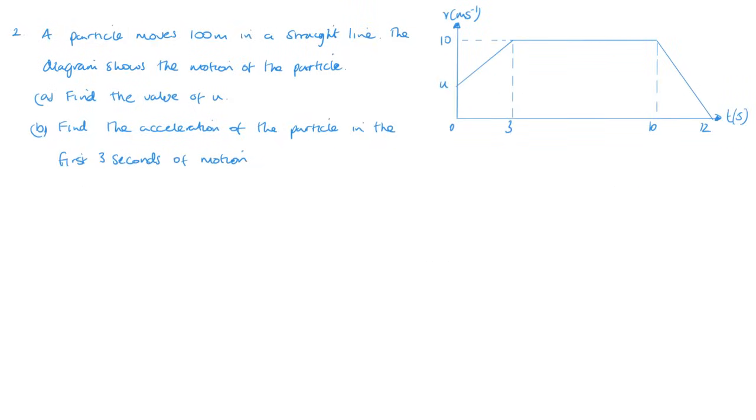Question two. A particle moves 100 meters in a straight line. Diagram shows the motion of the particle. Find u. Now with the use of the formulae, this would be a relatively straightforward question, but at this point we don't know the formula or the formulae.